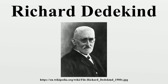This thesis did not display the talent evident by Dedekind's subsequent publications. At that time, the University of Berlin, not Göttingen, was the main facility for mathematical research in Germany. Thus Dedekind went to Berlin for two years of study, where he and Bernhard Riemann were contemporaries. They were both awarded the habilitation in 1854.